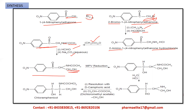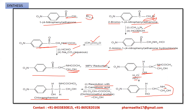After Meerwein-Ponndorf-Verley reduction, the carbonyl double bond is reduced to form an alcohol (OH group). Then after addition of water and hydrochloric acid, there is a cleavage and we simply obtain an NH2 group, with the rest of the structure unchanged. Finally, after resolution with camphoric acid and dichloromethyl acetate, we obtain our final compound, chloramphenicol.